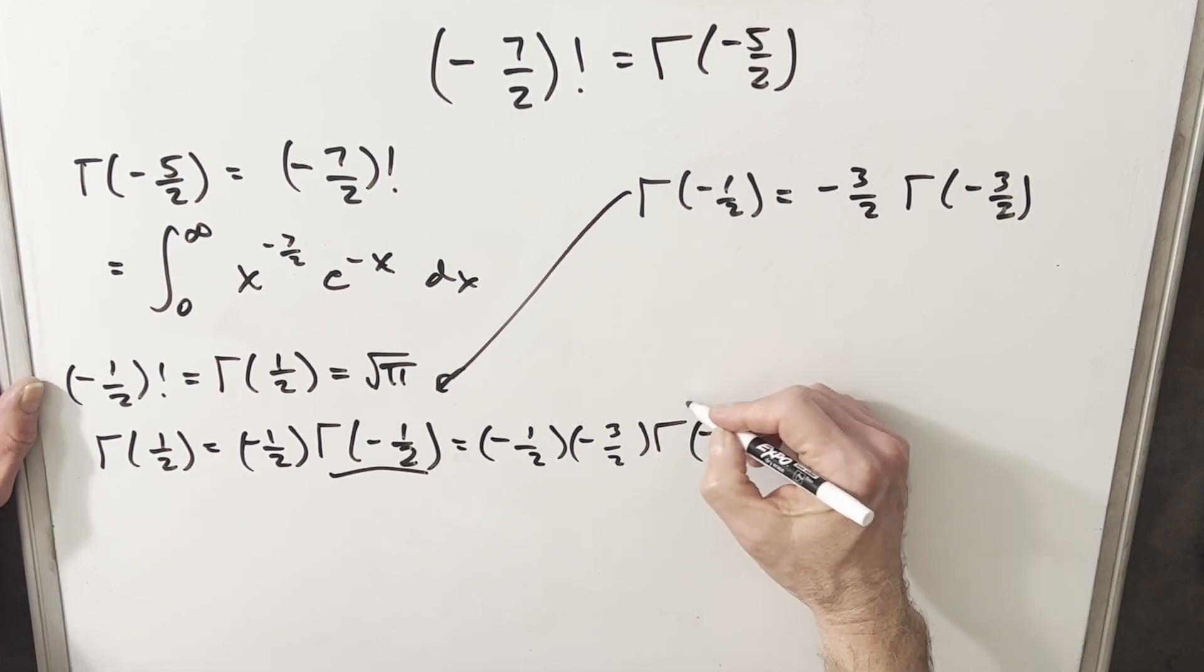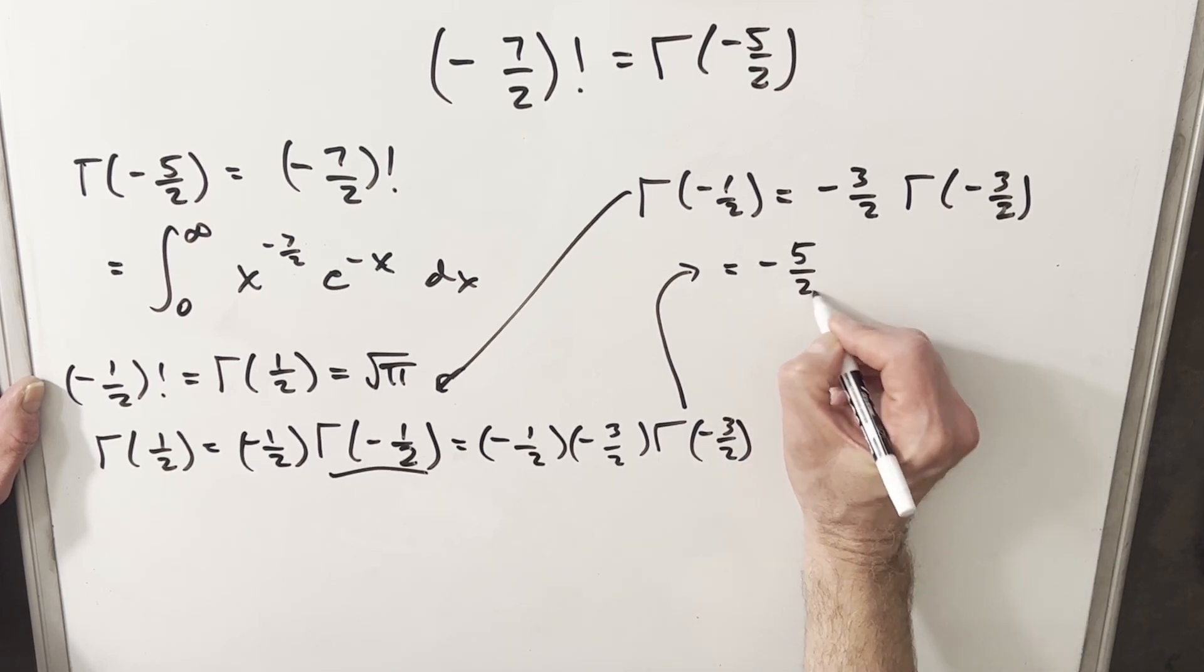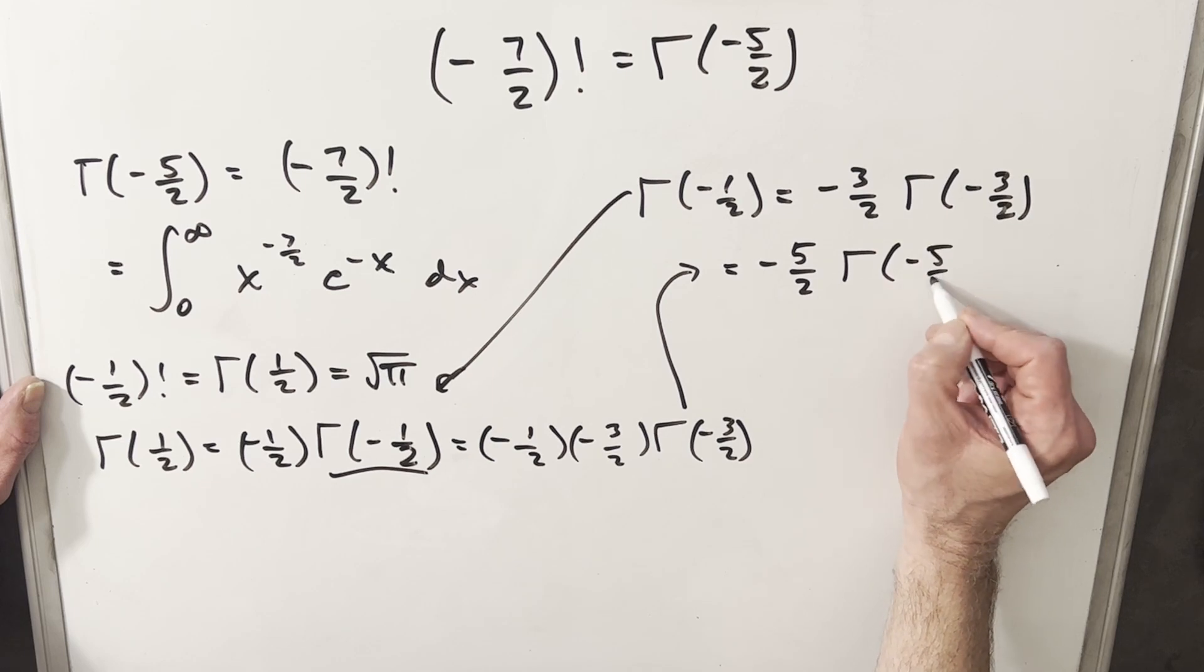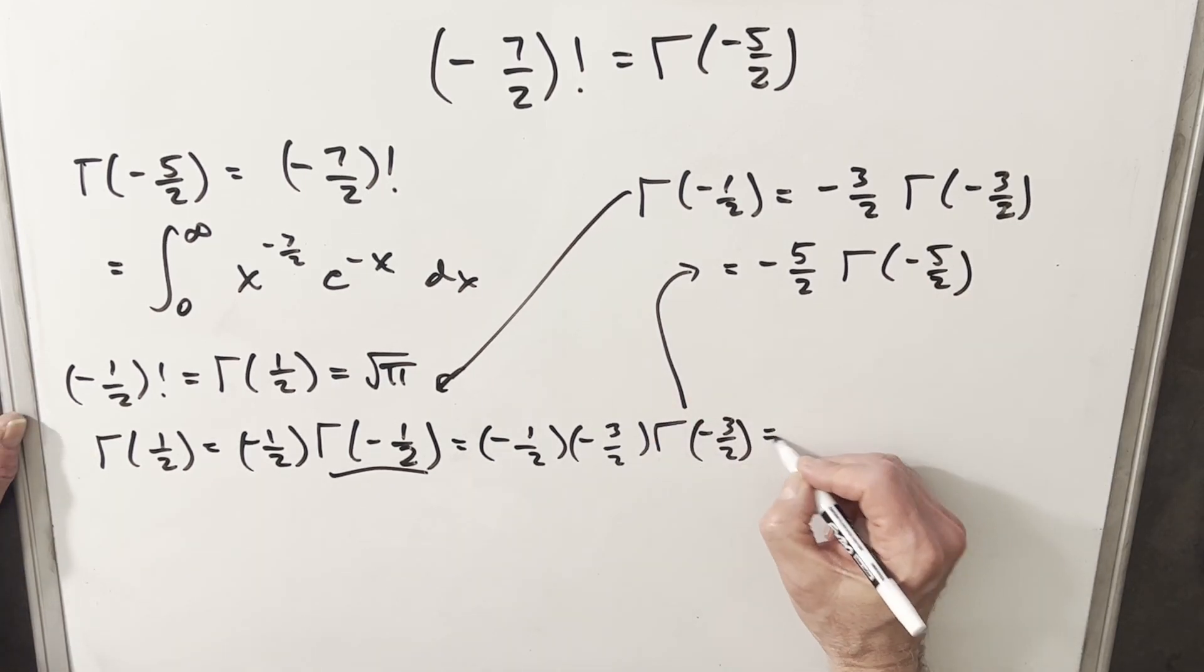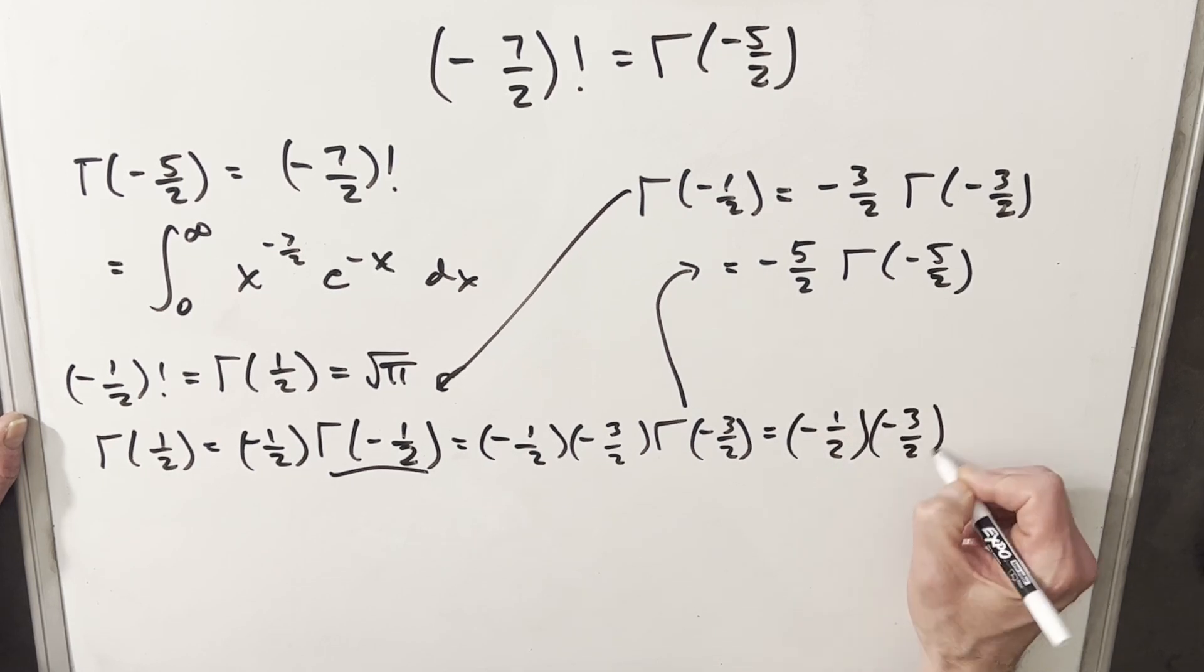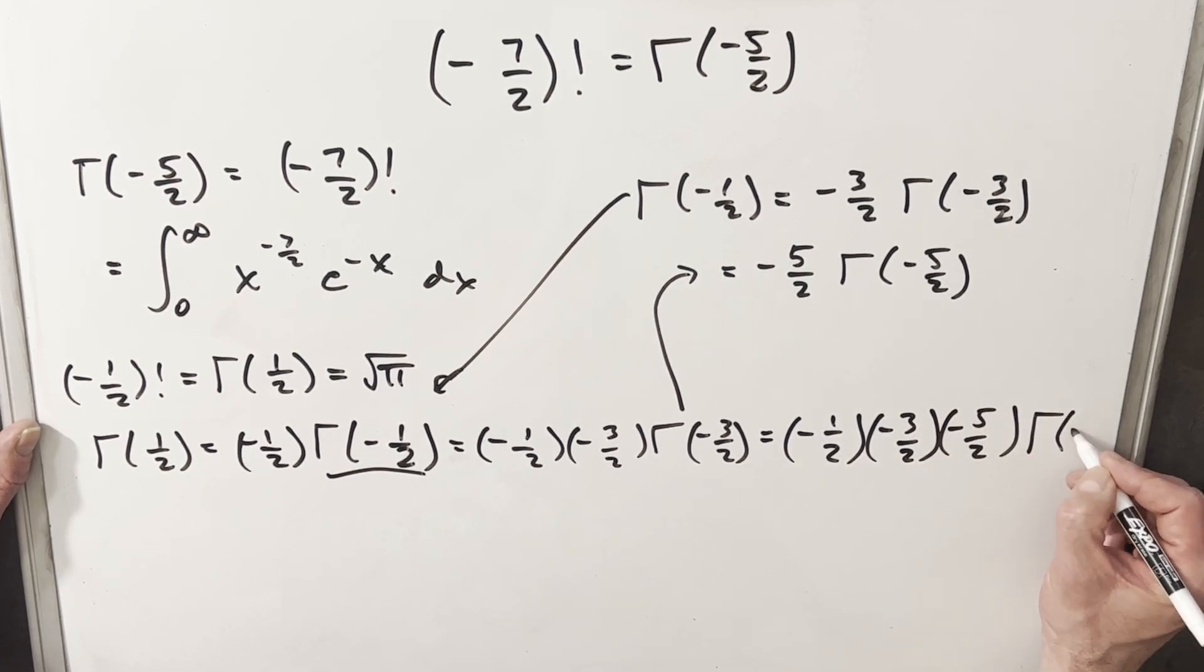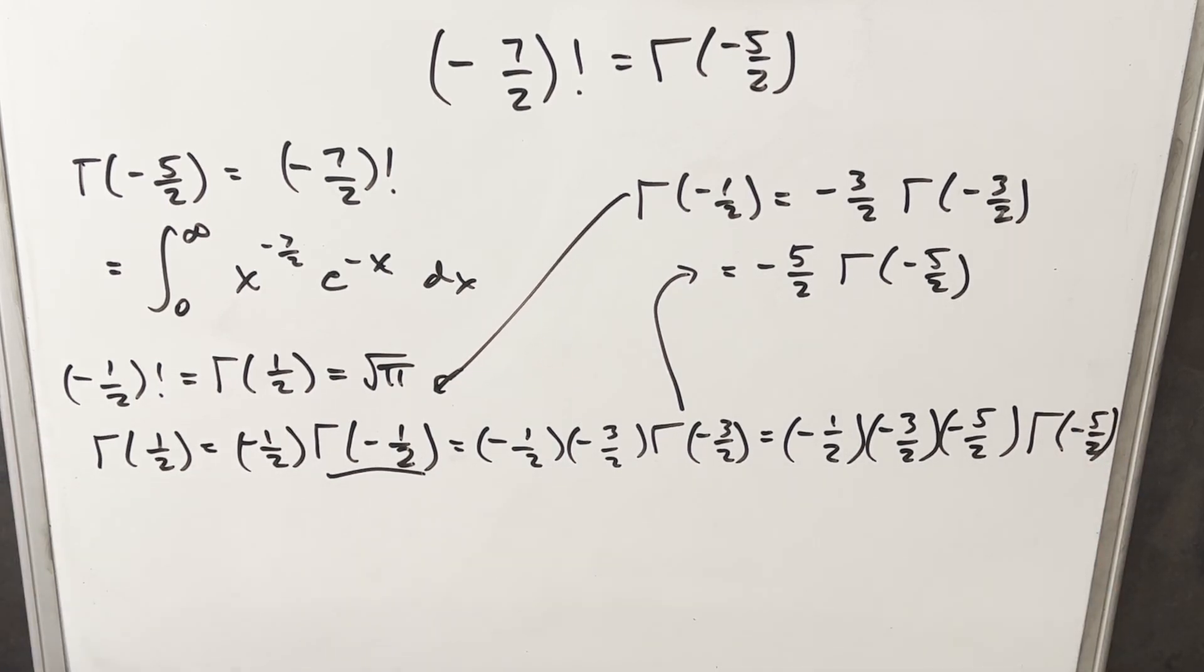But we can just do the exact same thing again on gamma of minus three halves. This thing's the same thing as minus five halves times gamma of minus five halves. So plugging that back, we have minus one half, minus three halves, minus five halves, gamma of minus five halves. You see, we can use it repeatedly just like factorial.